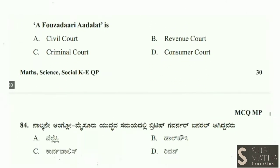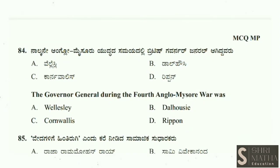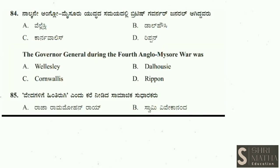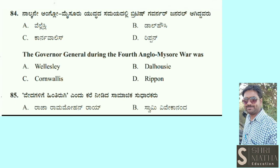Next question: Who was the Governor General during the Fourth Anglo-Mysore War? Options are Wellesley, Dalhousie, Cornwallis, Ripon. The answer is Lord Wellesley. Lord Wellesley was the Governor General at the time of the Fourth Anglo-Mysore War. Lord Dalhousie implemented the Doctrine of Lapse.